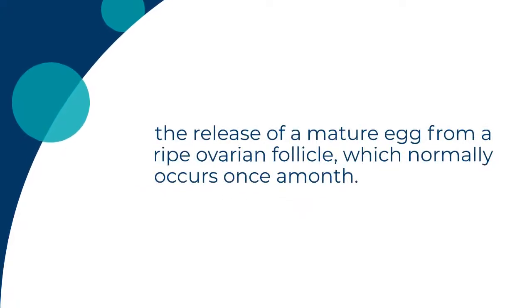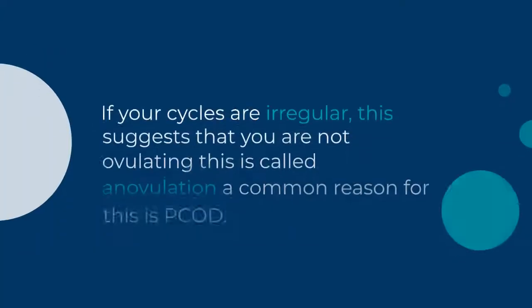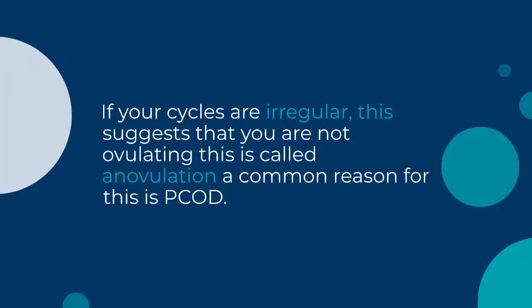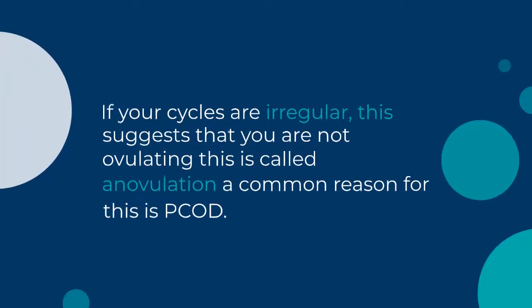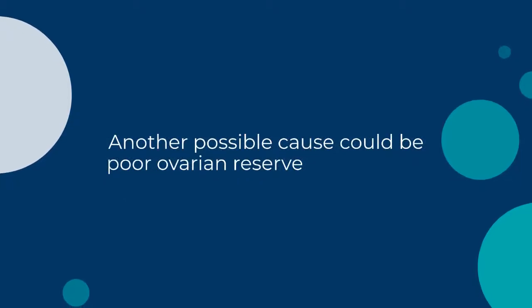If your cycles are irregular, this suggests that you are not ovulating — this is called anovulation. A common reason for this is PCOD. Another possible cause could be poor ovarian reserve.